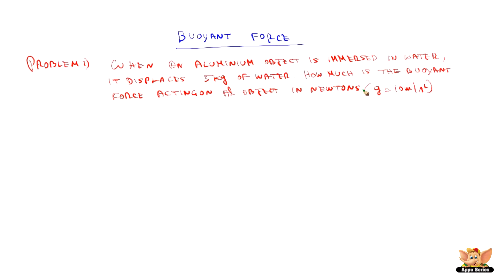So basically an aluminum object is immersed in water and it weighs 5 kg and we need to find out what is the buoyant force. That upward thrust is nothing but the buoyant force. Now we know as per Archimedes principle,